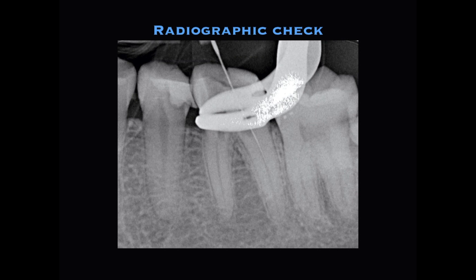I've found the canal. The next thing I want to do is take a radiograph. You can visually see in this radiograph that the file is in the distal canal. The reason for taking a radiograph is to confirm it's a canal and not a perforation — early identification and the size of a perforation really matters when it comes to perforation repair.